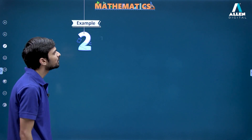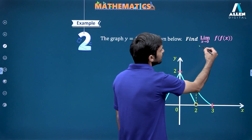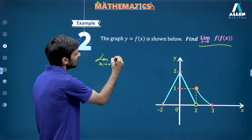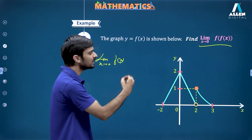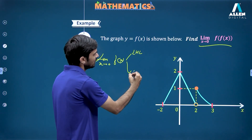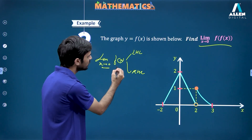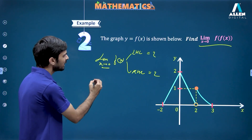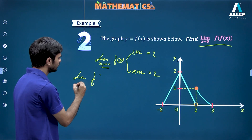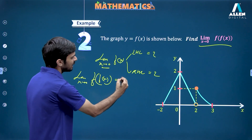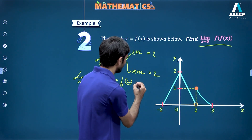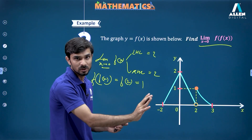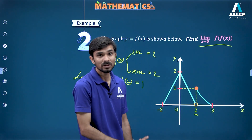Let's see this with another example. The graph of f(x) is shown and I need to evaluate limit x→0 of f(f(x)). If I find limit x→0 f(x): the LHL is 2 and the RHL is also 2, so the limit is 2. I might write f(f(x)) as f(2) = 1. But there's a problem: the limit inside is approaching 2, and at 2 the function is discontinuous. So sending the limit inside is not valid.